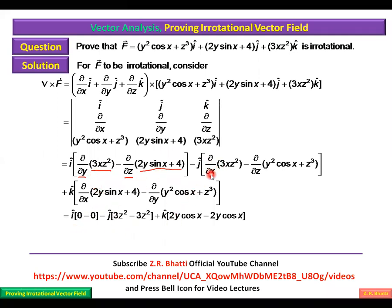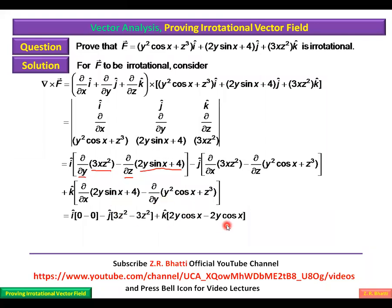The partial derivative of 3xz² with respect to x gives 3z². The partial derivative of (y² cos x + z³) with respect to z gives 3z². For the k component: the partial of (2y sin x + 4) with respect to x gives 2y cos x, and the partial of (y² cos x + z³) with respect to y gives 2y cos x.